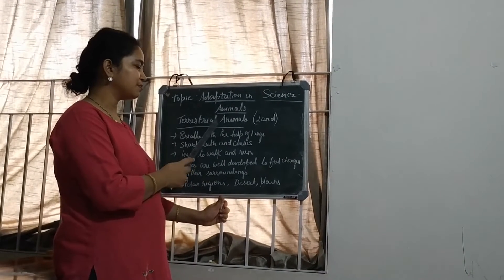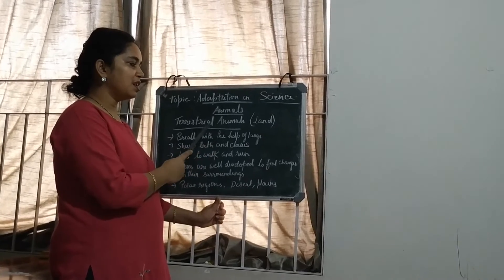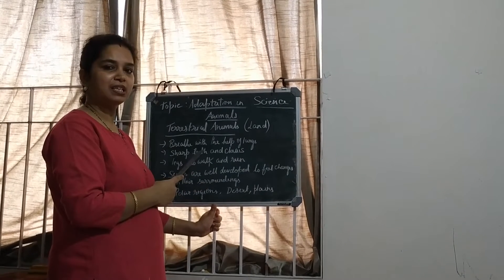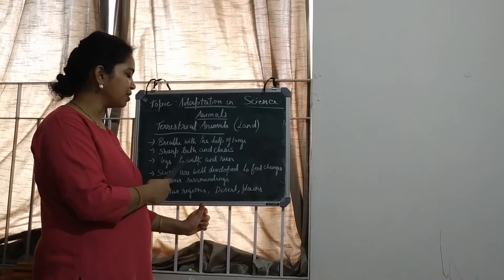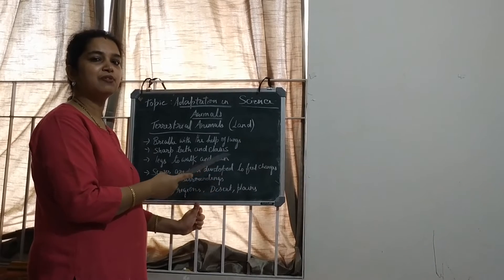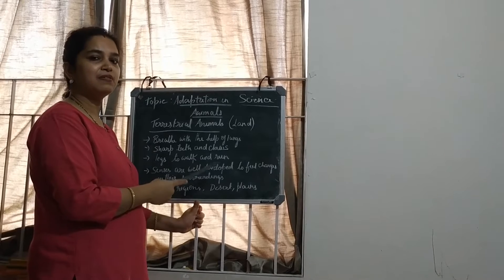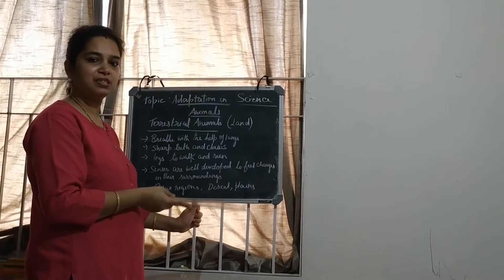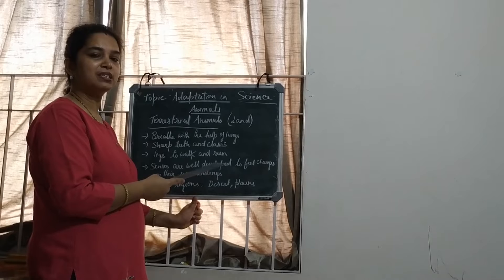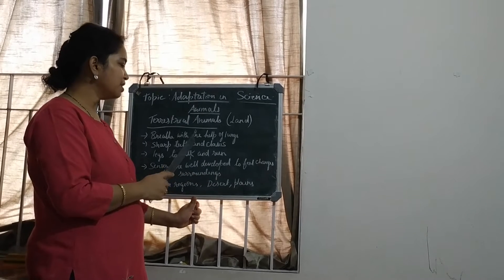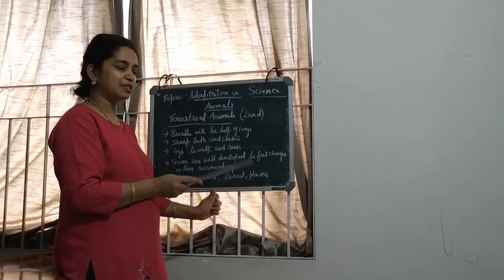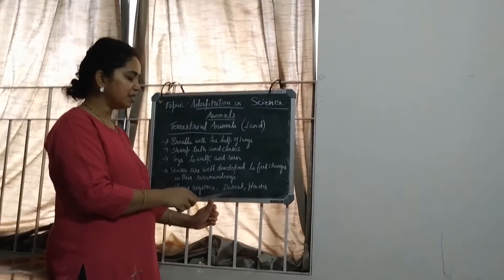Now let's learn about the terrestrial animal. The animals that live on land are called terrestrial animals. They breathe with the help of lungs. They have sharp teeth and claws so as to catch their prey. They have strong legs to walk and run on the ground to catch prey and to escape from enemies. They have well-developed senses to feel changes in the surrounding, look for food, and protect themselves from enemies. These land animals are found in different parts which differ in climate: polar region, desert, and plains.